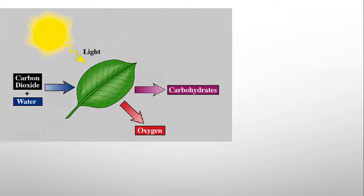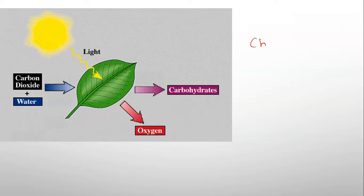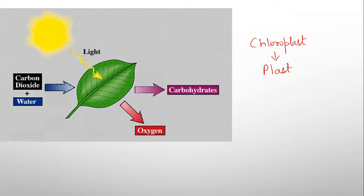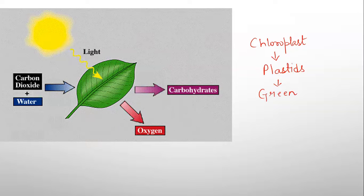This process takes place in the chloroplasts, which are the site of photosynthesis. Chloroplasts are plastids that are green in color. They are present only in plant cells and are located within the mesophyll cells.